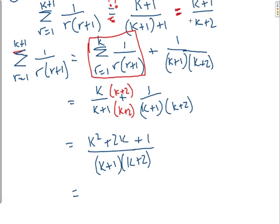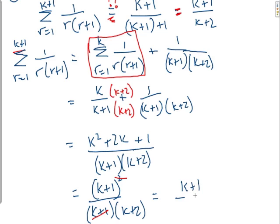I know this is my objective. If I notice the top, that factors conveniently to k plus 1 squared over k plus 1, k plus 2. I can then go and do a little bit of cancelling. That square goes away with that. And so I get a single k plus 1 over k plus 2.